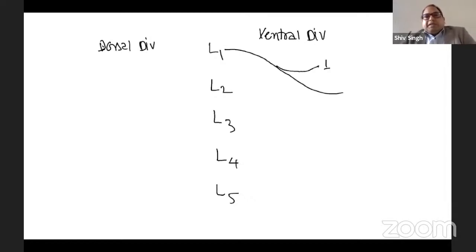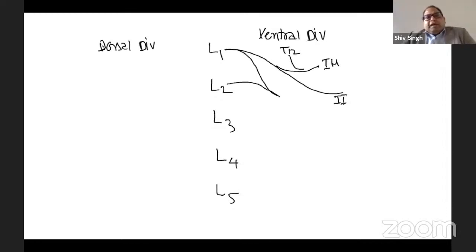L1 also participates in the lumbar plexus and gives rise to the ilio-inguinal and ilio-hypogastric nerves. The ilio-hypogastric nerve also gets a branch from T12. L1 and L2 also form the genitofemoral nerve, which divides into the genital branch and the femoral branch.